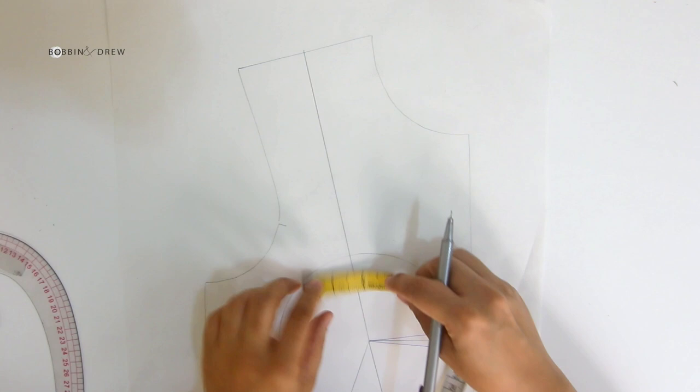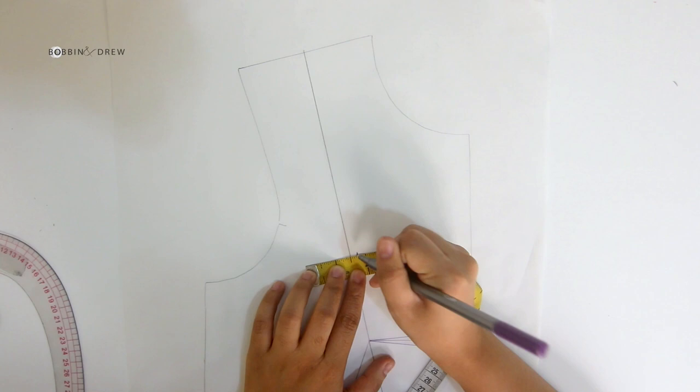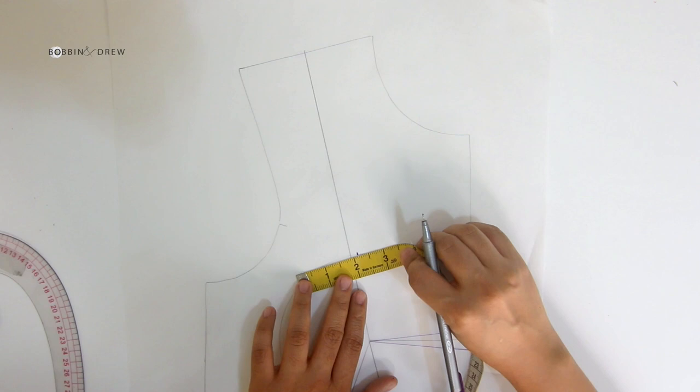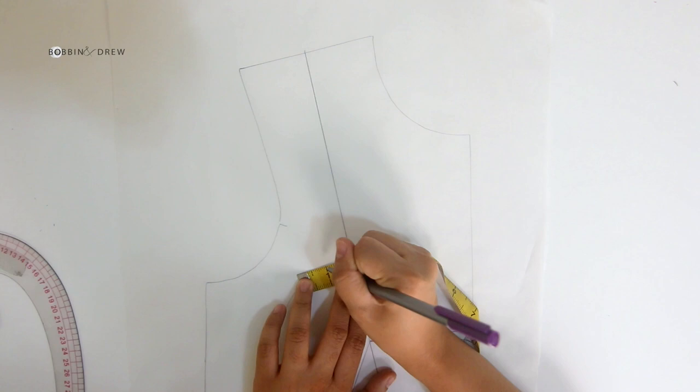And for a dress form that I have with a B cup size, the total excess I need to remove from the pattern measures one and one-eighth. So first, I mark one-fourth on the center front panel or to the right of the block, and I leave the rest of the measurement to the side panel. So that's a total of seven-eighths.